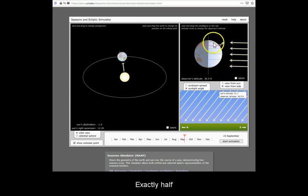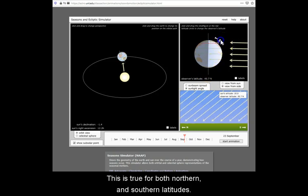Exactly half of each latitude is in daylight, and half of it is in nighttime. This is true for both northern and southern latitudes.